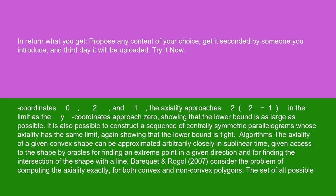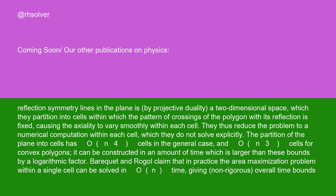Barquet and Rogol (2007) consider the problem of computing the axiality exactly, for both convex and non-convex polygons. The set of all possible reflection symmetry lines in the plane is, by projective duality, a two-dimensional space, which they partition into cells within which the pattern of crossings of the polygon with its reflection is fixed, causing the axiality to vary smoothly within each cell. They thus reduce the problem to a numerical computation within each cell, which they do not solve explicitly.